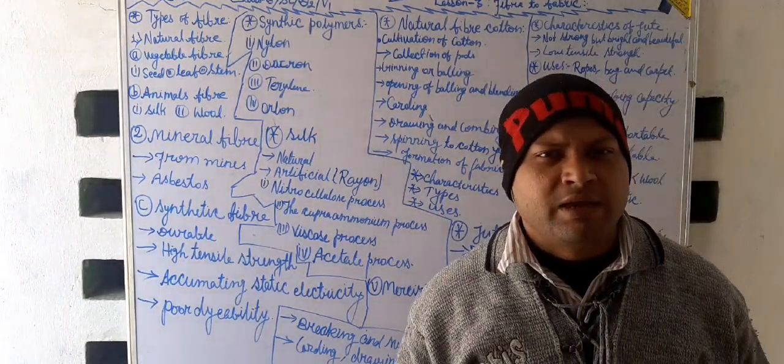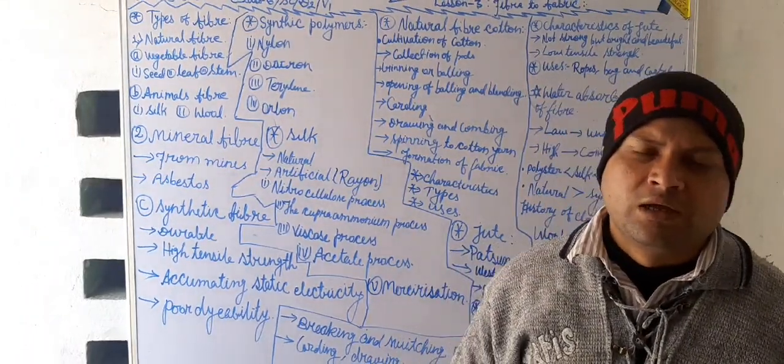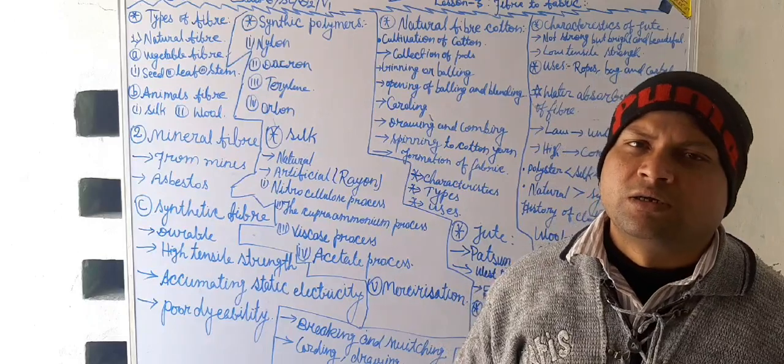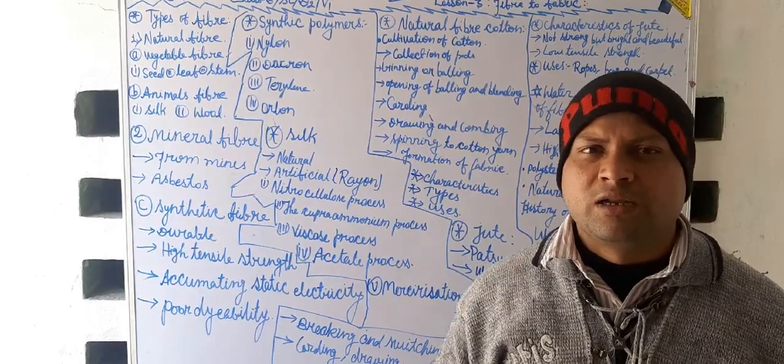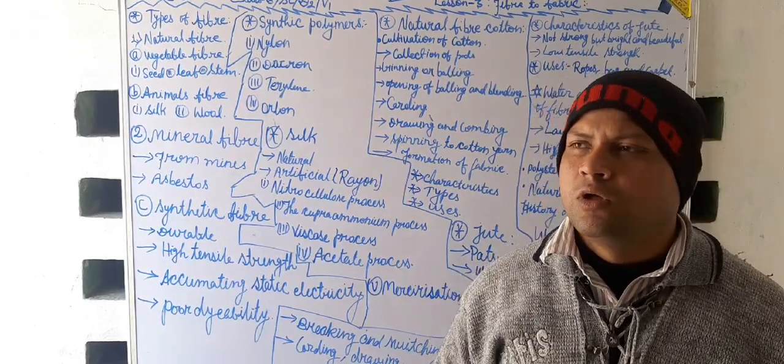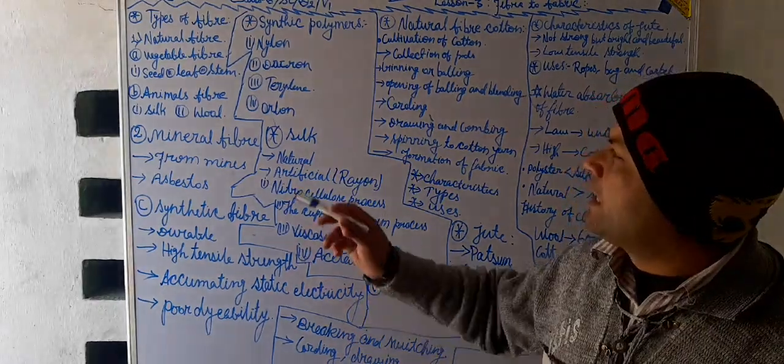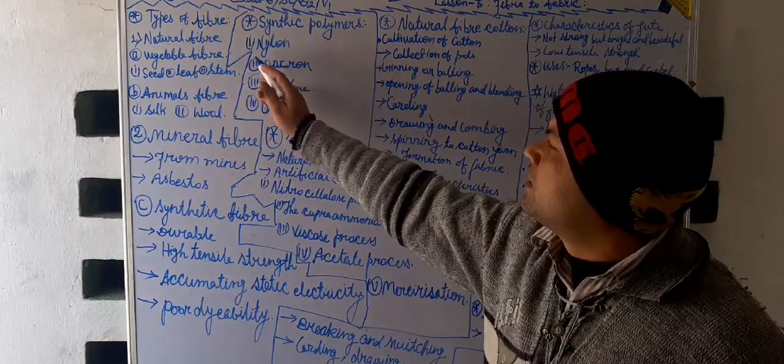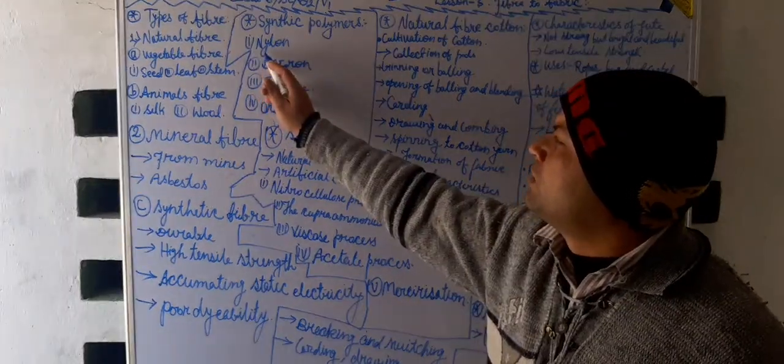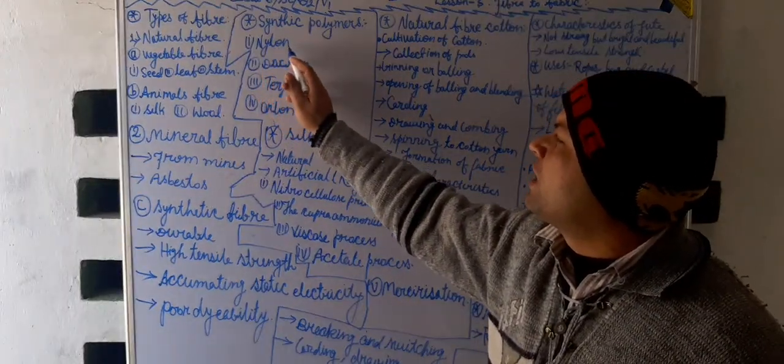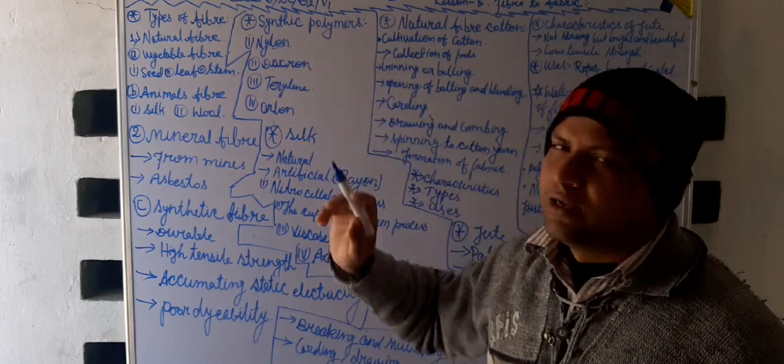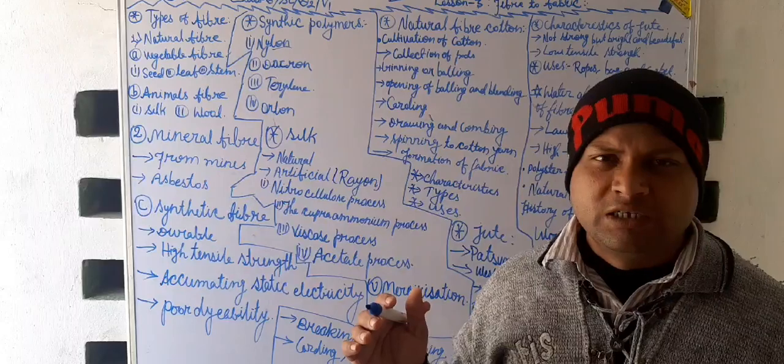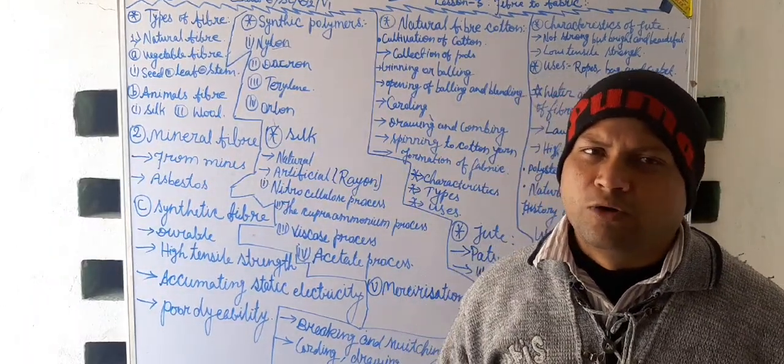Nylon is named after the name of two big cities belonging to two scientists. First, New York and second is London. New York and London combined together to produce nylon. The names arranged from these two cities are termed as nylon.